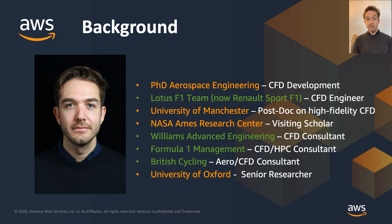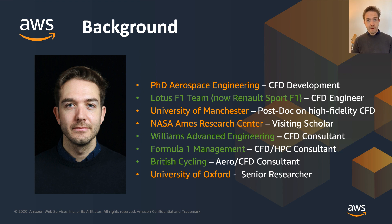I went to NASA, which was one of the most influential experiences — gaining exposure to overset grids, structured meshing, and how the aerospace sector approaches things differently from automotive. After that I worked as a consultant at Williams Advanced Engineering on Le Mans, touring cars, and other motorsport beyond Formula One. Most recently, I worked with Formula One Management as a consultant on CFD HPC — which is where I was first introduced to AWS — focusing on the 2022 rules, and with British Cycling on the Olympic bike. Before joining AWS I was a senior researcher at Oxford leading an automotive aerodynamics research group.